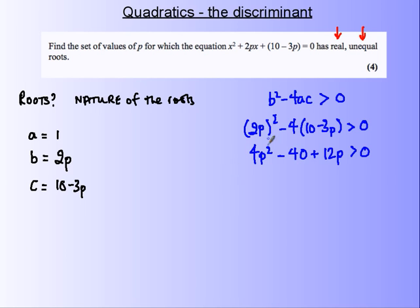Divide through by four and just turn this around a bit. Divide by four: p squared plus three p minus ten. And I want this to be greater than zero.